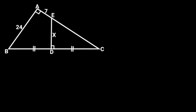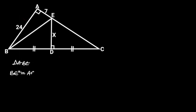To solve this problem, first let's join E and B with a straight line. Observe that triangle ABE is a right triangle. So from Pythagoras' theorem, BE squared is equal to AB squared plus AE squared.